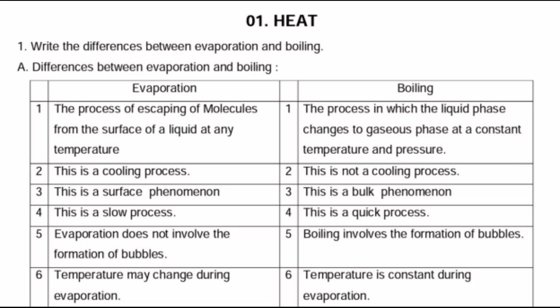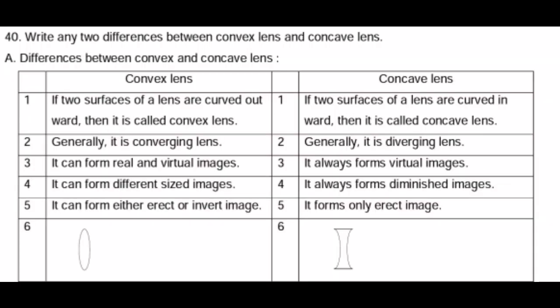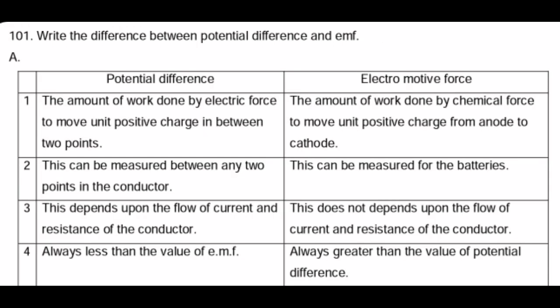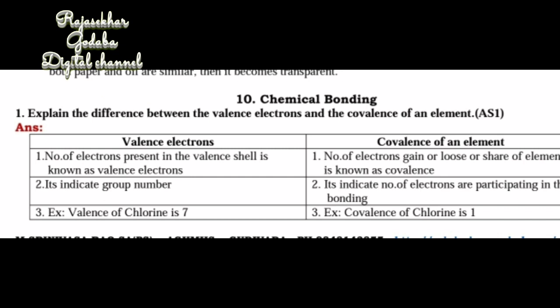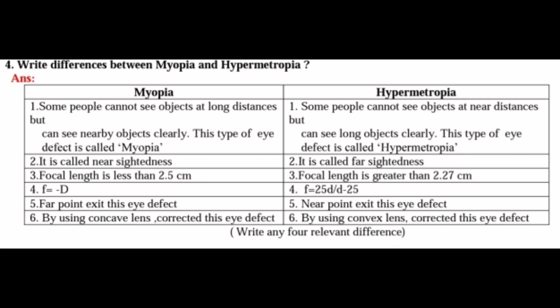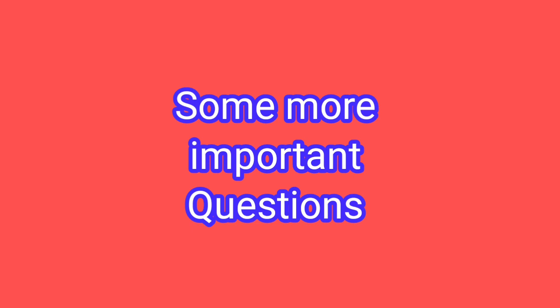Now, I have to explain what are the important differences questions in physical science: evaporation and boiling, heat and temperature, convex lens and concave lens, potential difference and electromotive force, roasting and calcination, valence electrons and covalence electrons, myopia and hypermetropia. All right.